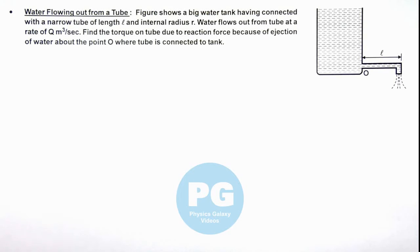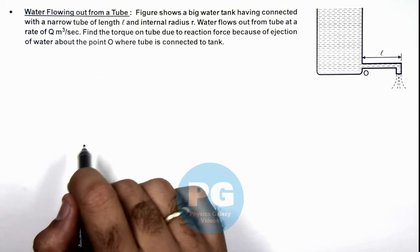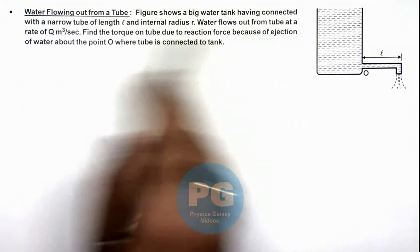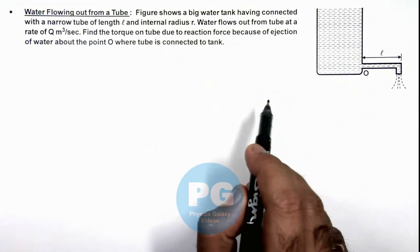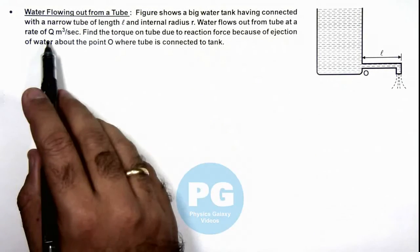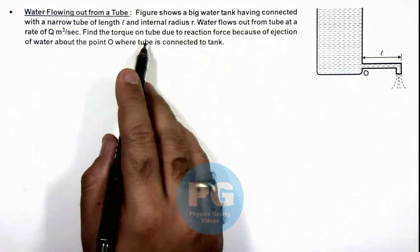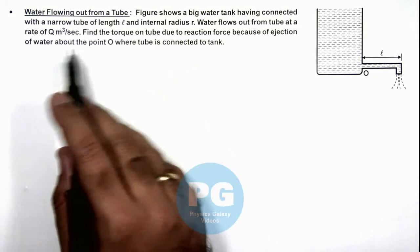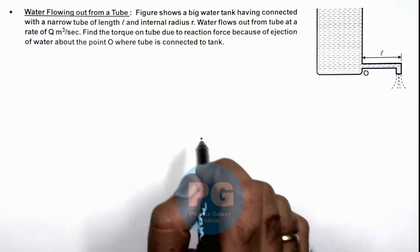In this illustration, we'll discuss water flowing out from a tube. We are given that the figure shows a big water tank connected with a narrow tube of length l and internal radius r. Water flows out from the tube at a rate of Q m³/sec. We are required to find the torque on the tube due to reaction forces because of ejection of water about point O, where the tube is connected to the tank.